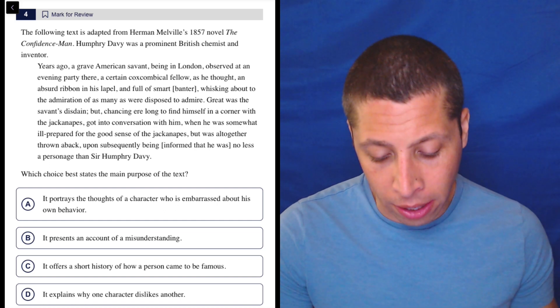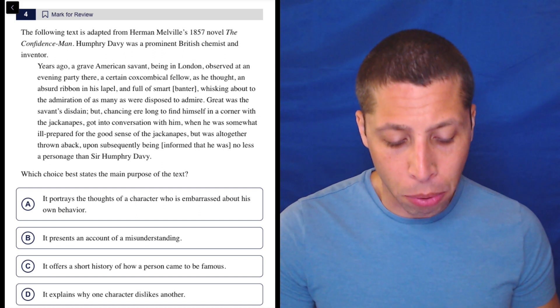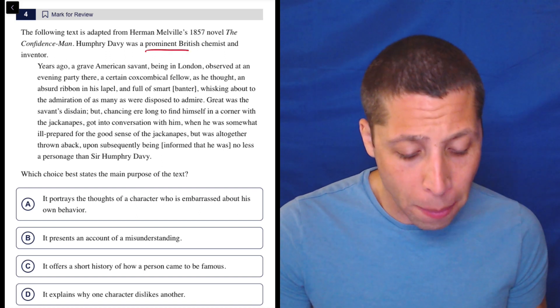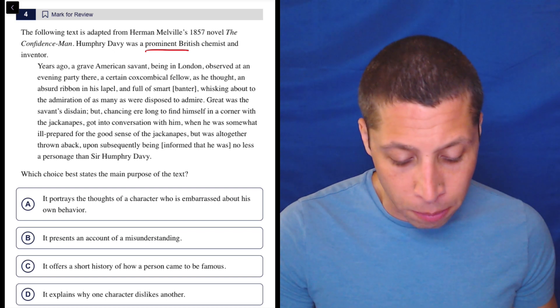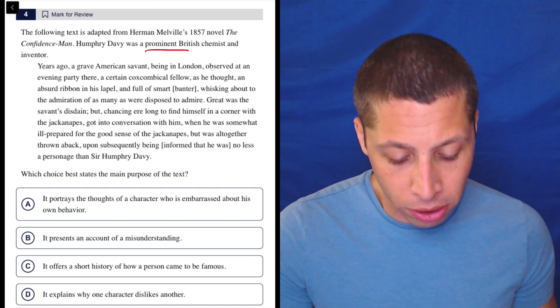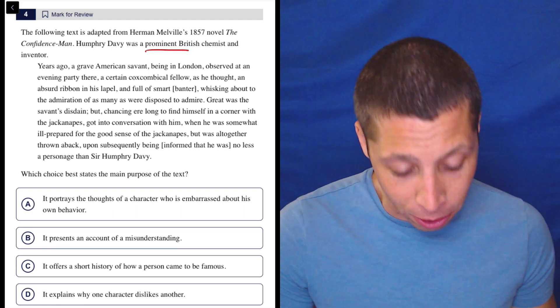Let's read everything here. This is from this novel. Humphrey Davy was a prominent British chemist and inventor. Prominent means important. Years ago, a grave American savant being in London observed at an evening party there a certain coxcombical fellow,